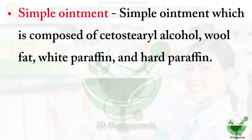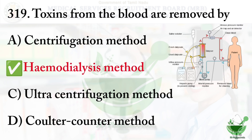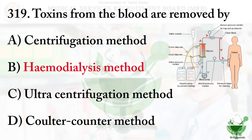Question number 319: Toxins from the blood are removed by? Option A: centrifugation, Option B: hemodialysis, Option C: ultracentrifugation, Option D: Coulter counter method. The correct answer is Option B, hemodialysis. Hemodialysis is a treatment that filters waste and excess water from the body when kidneys are no longer able to do their work.